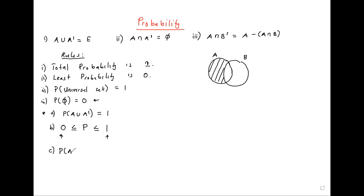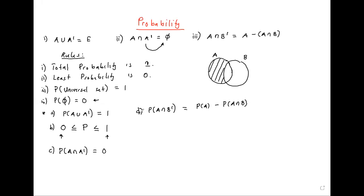The probability of A intersection A complement: remember, A doesn't intersect with A complement — the result is empty — so its probability is zero. The probability of A intersection B complement is the same as the probability of A minus the probability of A intersection B. This is rule D — because you've said these two are equal, so the probability of one is the same as the probability of the other.